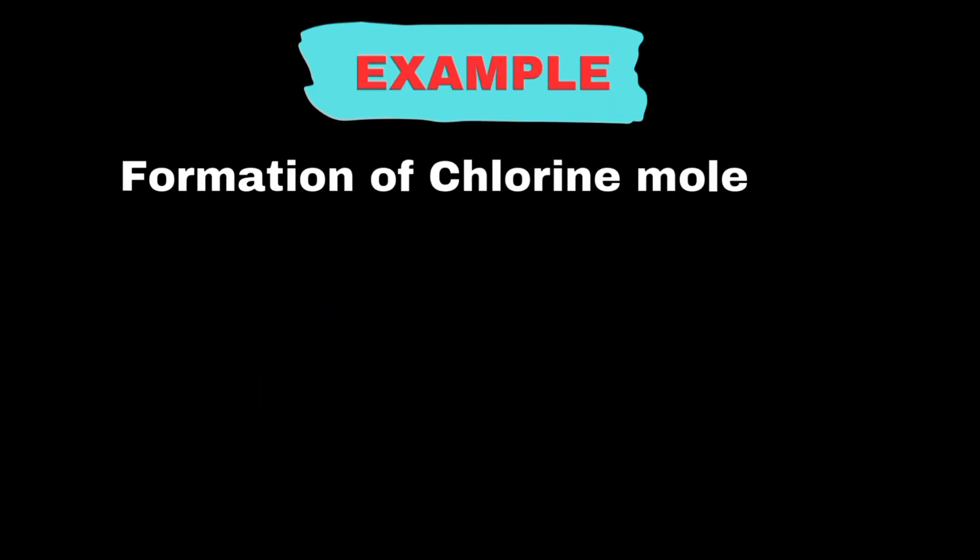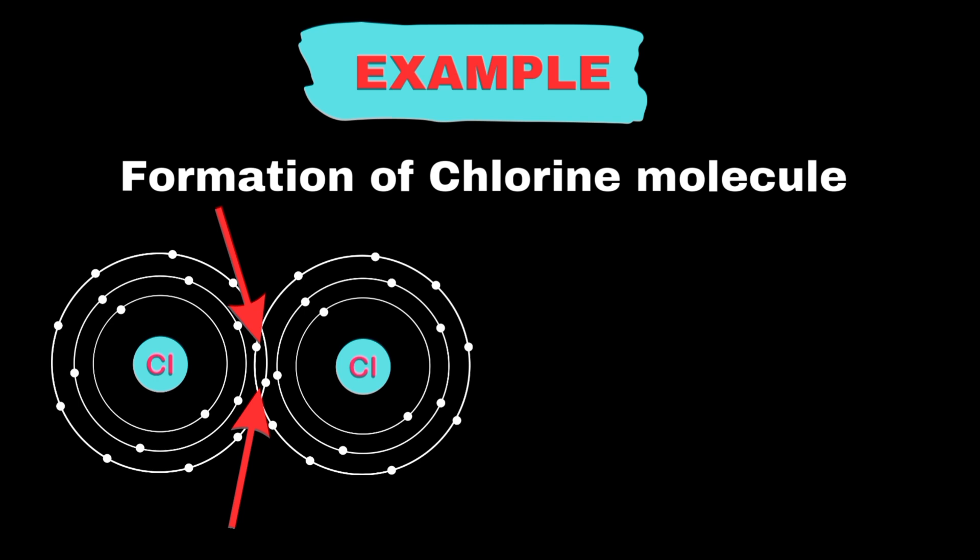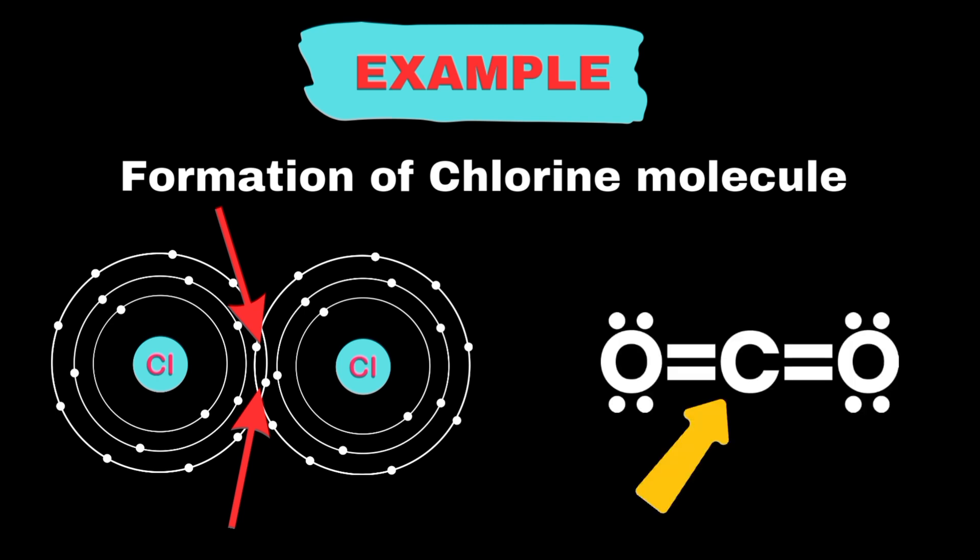For instance, in a chlorine molecule, two chlorine atoms share a pair of electrons, forming a covalent bond. Another example is carbon dioxide, where carbon shares electrons with two oxygen atoms.